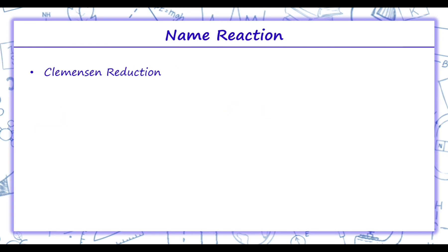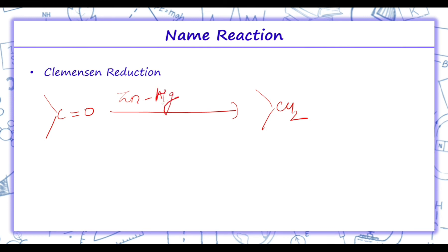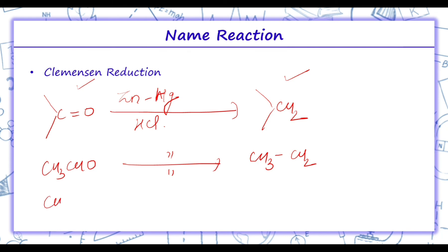Clemmensen's reduction is shown by carbonyl groups — aldehydes and ketones. These groups are reduced to a CH2 group on treatment with zinc amalgam, ZnHg, and concentrated HCl. Thus aldehydes or ketones are reduced to alkanes. For example, CH3CHO gives CH3CH3, and CH3COCH3 gives CH3CH2CH3. The CO group is converted into CH2.